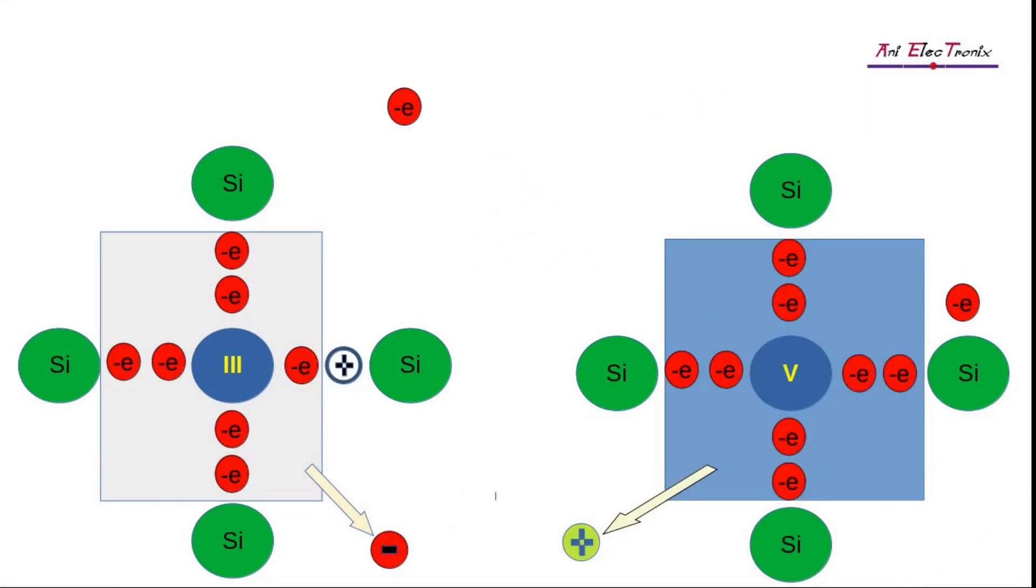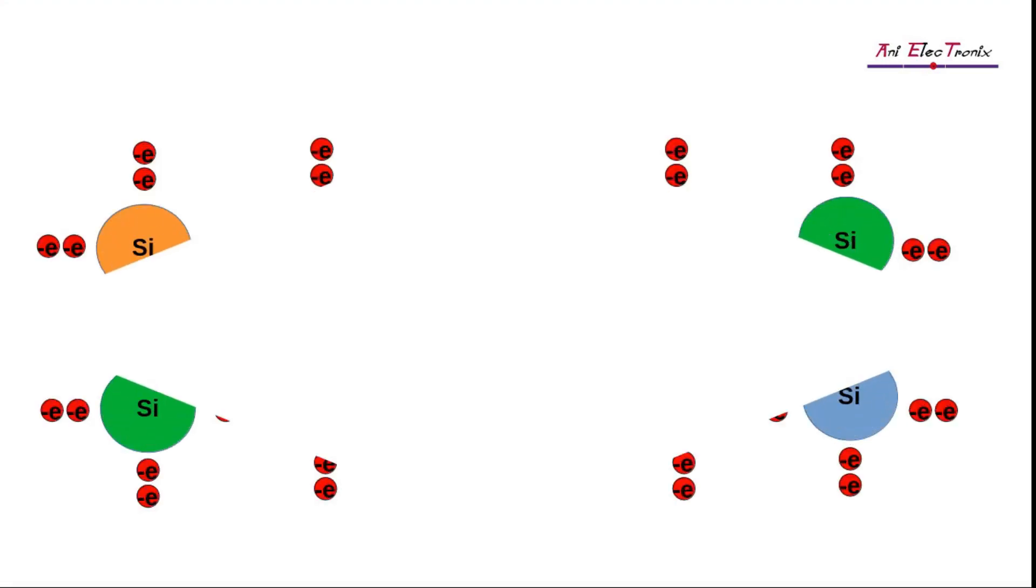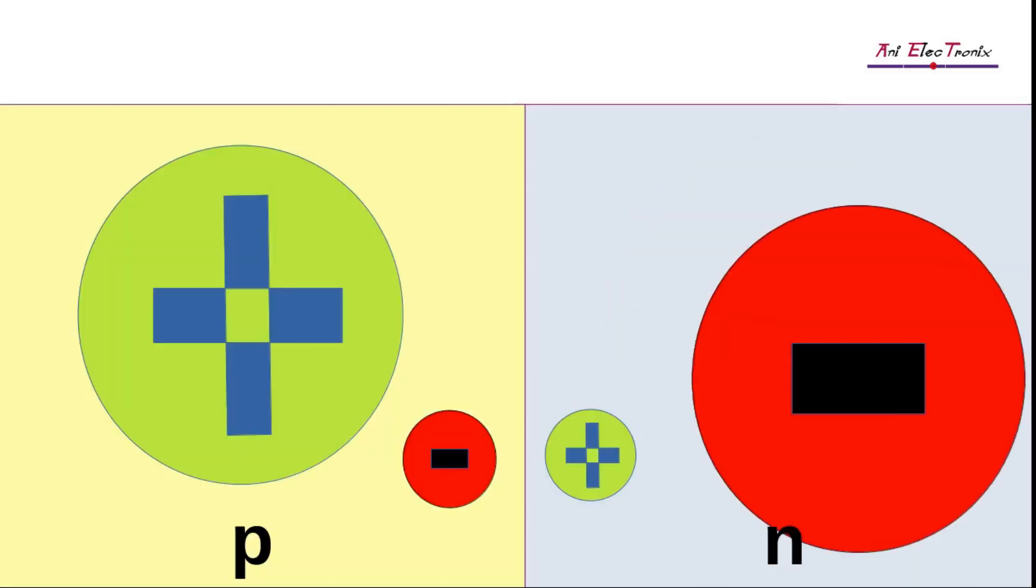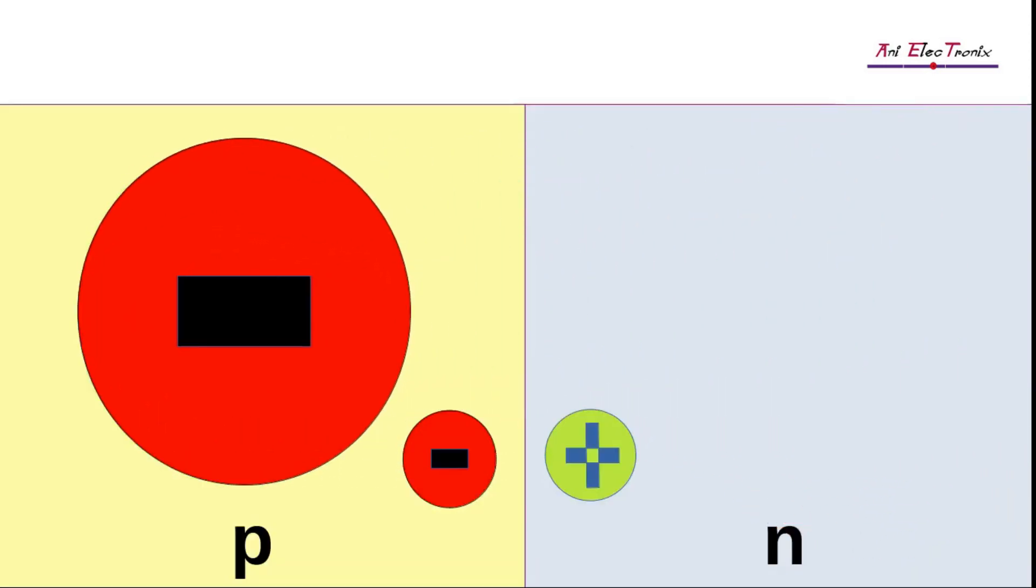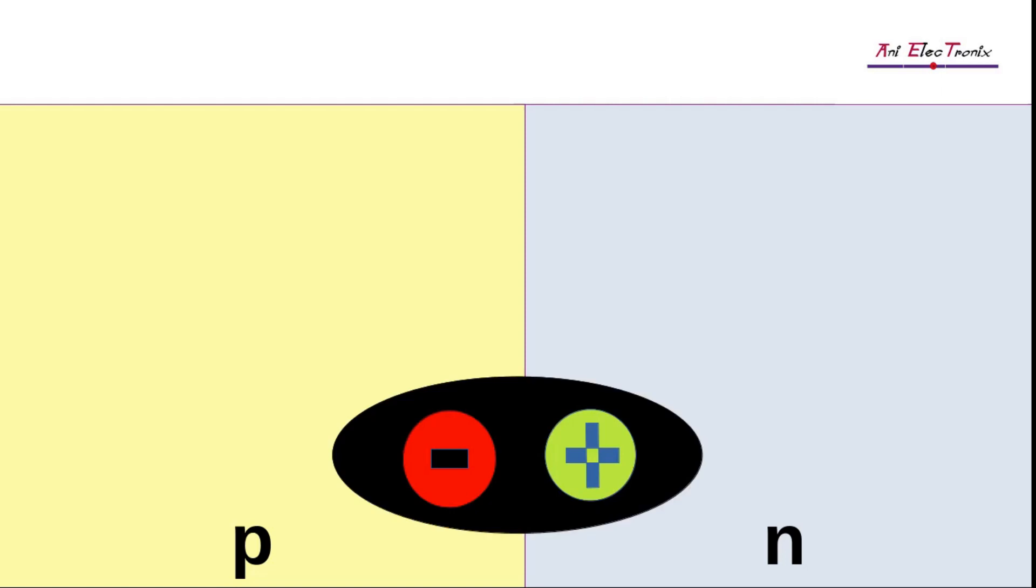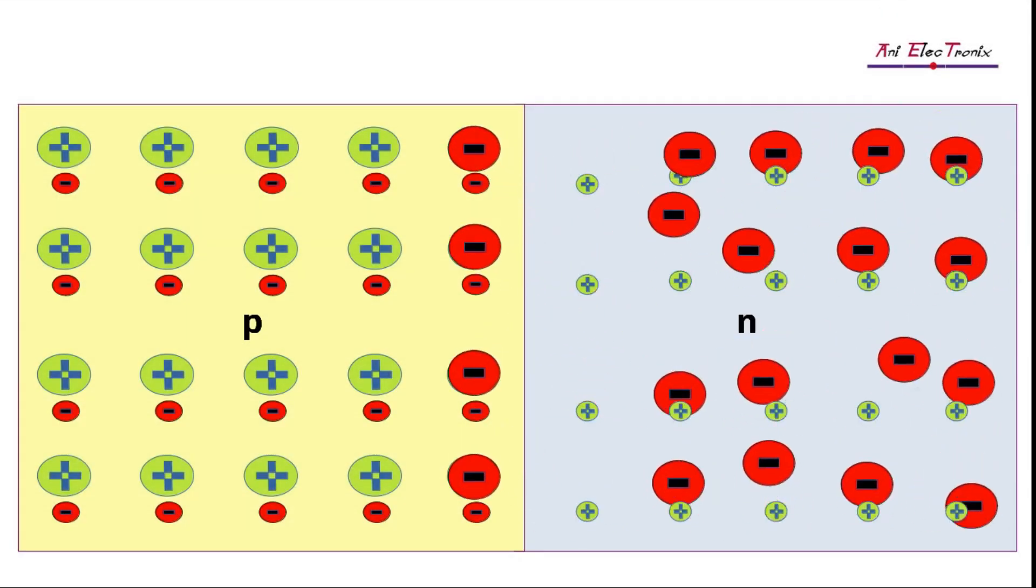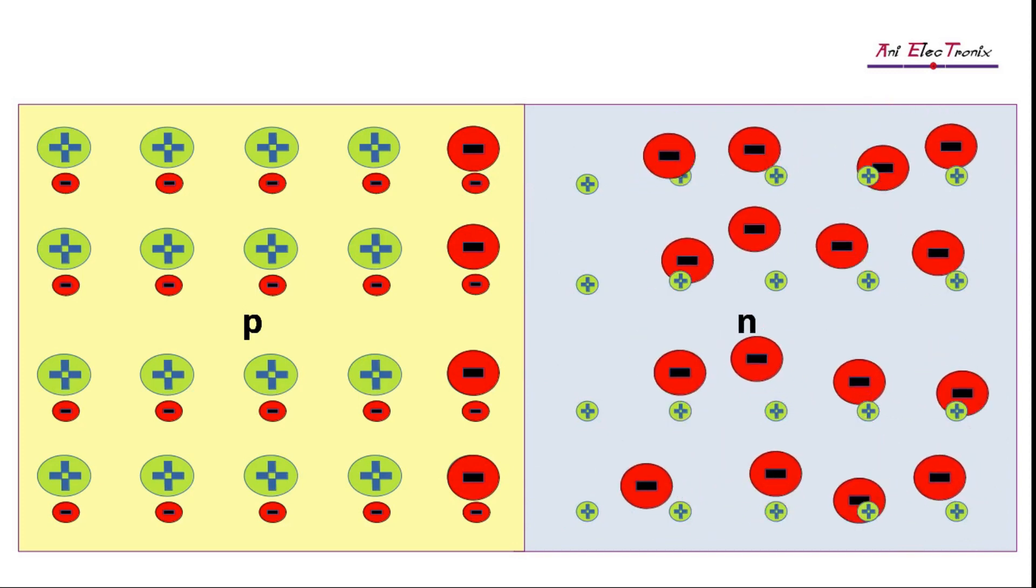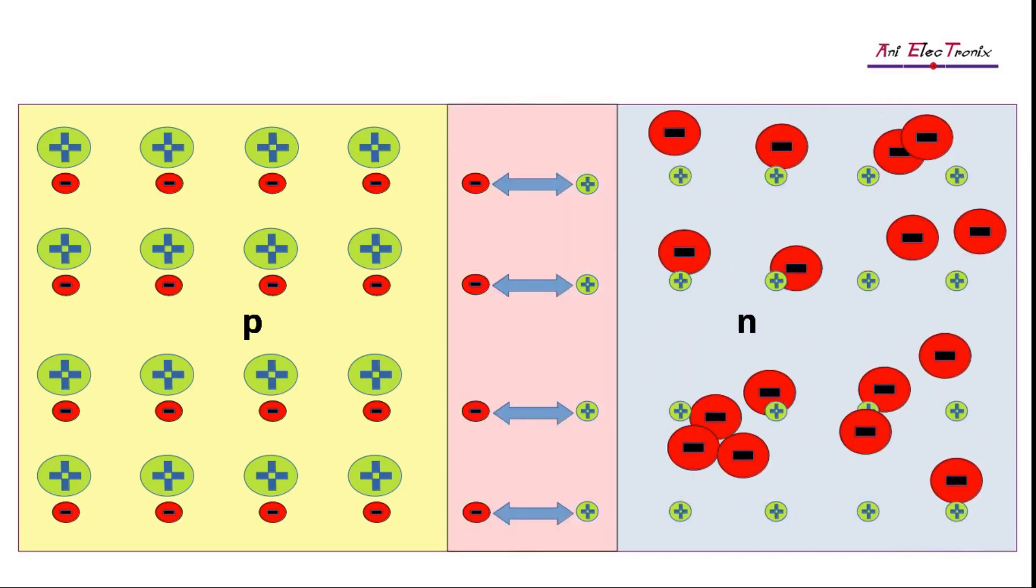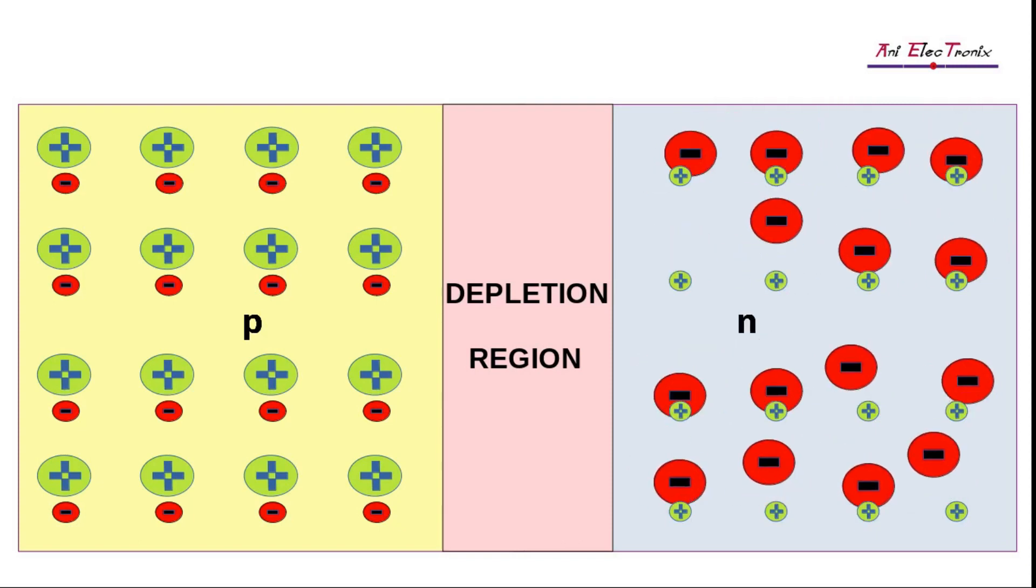In a semiconductor, free electrons can move while ions cannot. Due to the covalent bond, the ions are tightly fixed and form the crystal structure. Each time a free electron diffuses across the junction, an oppositely charged ion dipole is formed. The region becomes free of charge carriers as soon as the dipoles form at the junction. The charge carrier free zone is referred to as the depletion region.